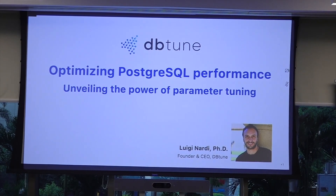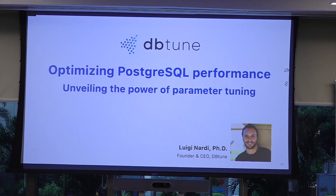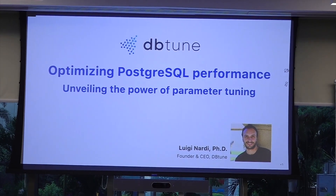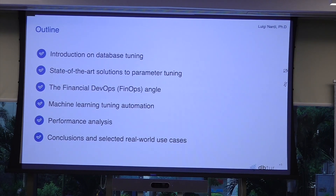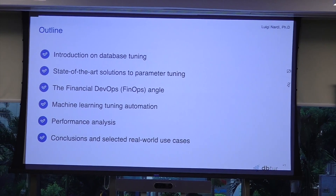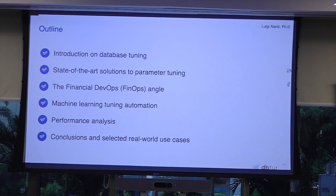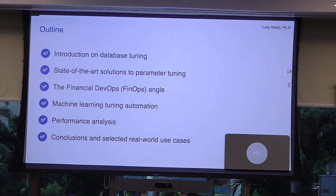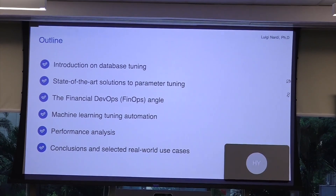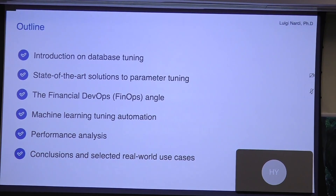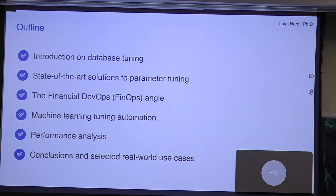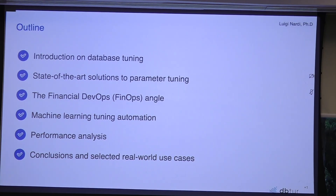We will be talking today about optimizing PostgreSQL performance, specifically focusing on parameter tuning. The outline covers an introduction to the problem, state-of-the-art solutions for parameter tuning, and a FinOps angle explaining the consequences of not tuning your database instances. We'll also explore a machine learning-based tuning automation approach.